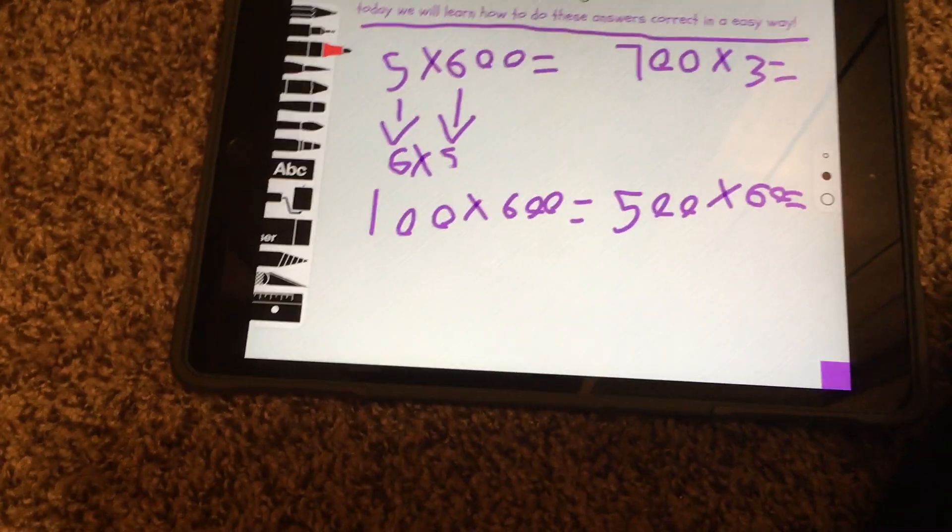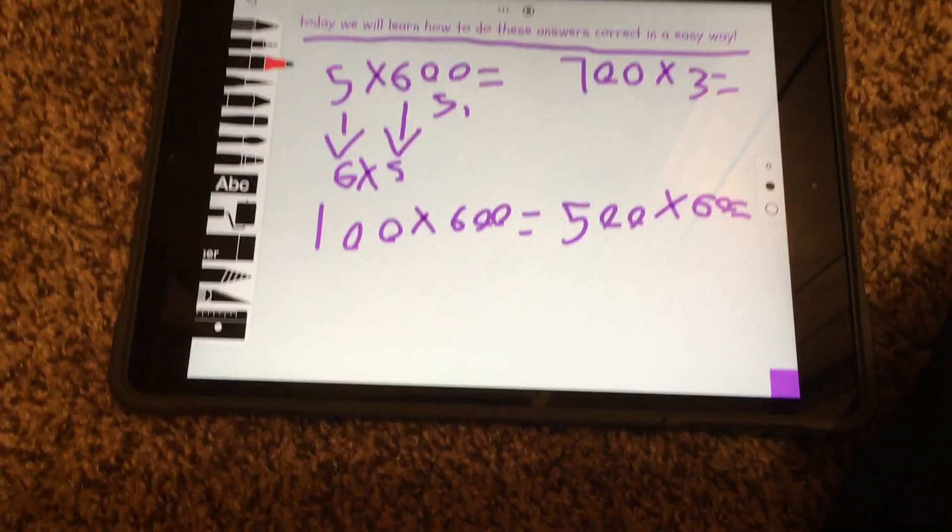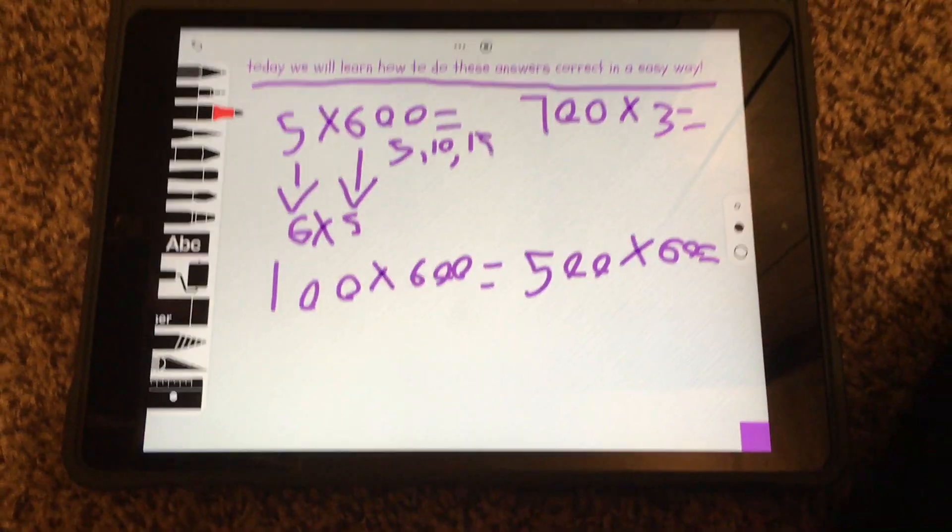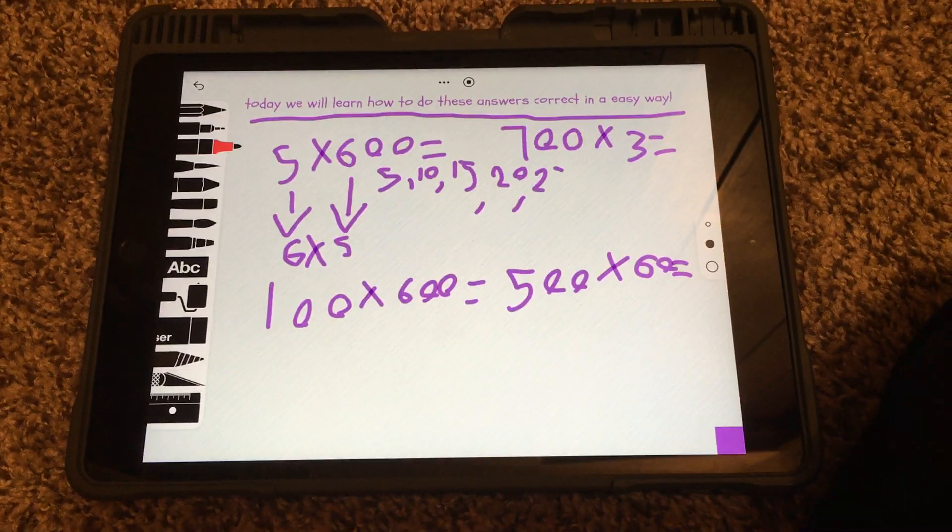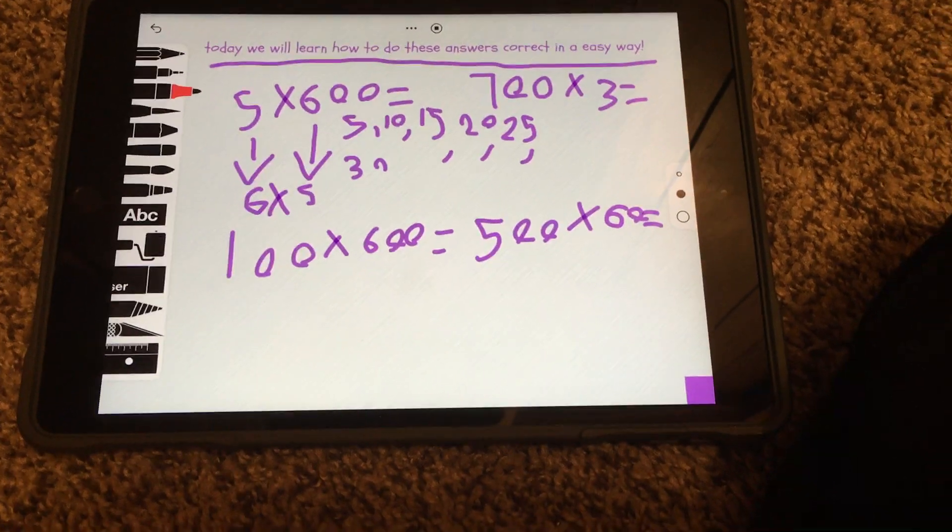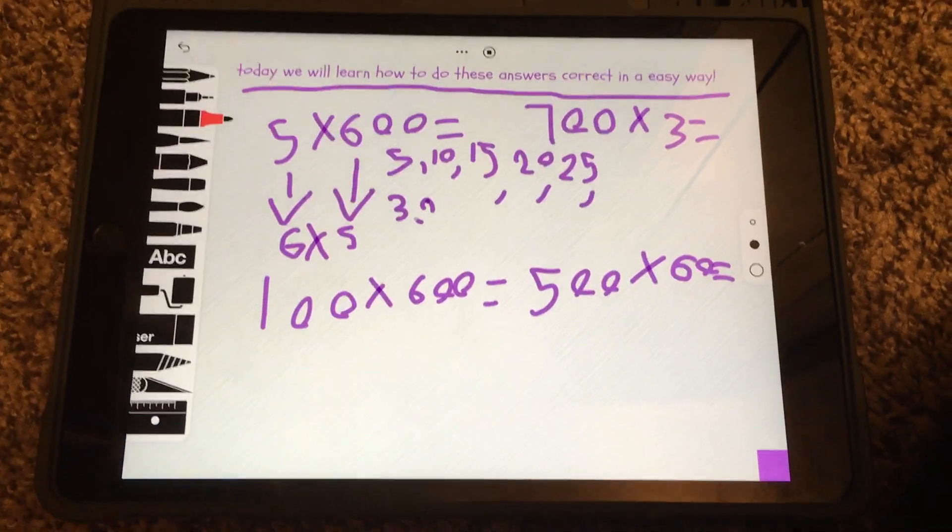6 times 5 equals 30. We will count by 5's until 6. 5, 10, 15, 20, 25, 30. 1, 2, 3, 4, 5, 6.